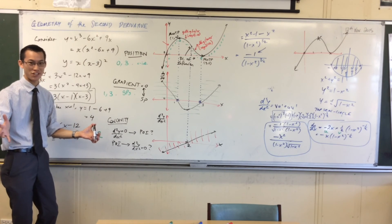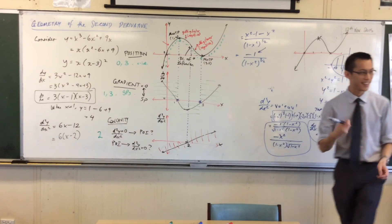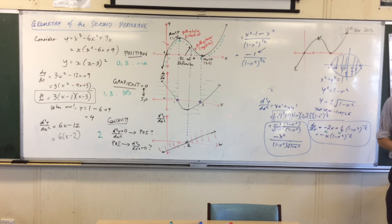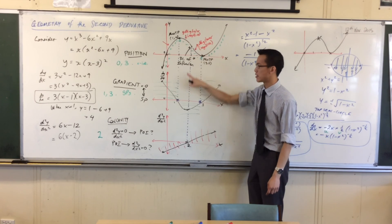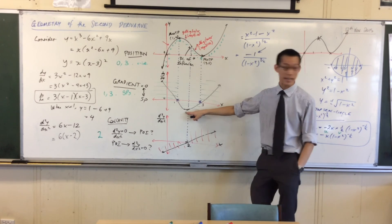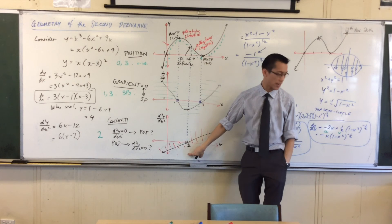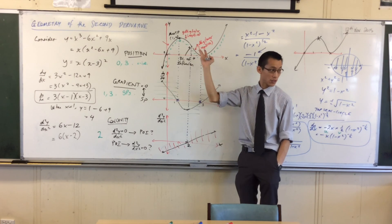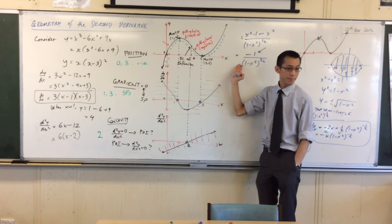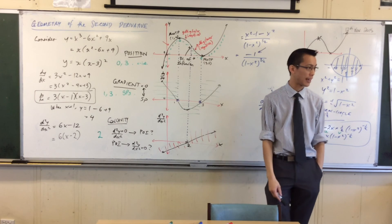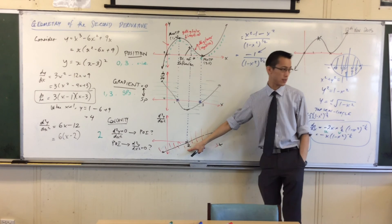Does anyone have any questions before I get you started on the first exercise? A student asks: I thought points of inflection had a gradient of zero? At this point, my first derivative is negative — it's decreasing, that's why it's going down. But that point is where the second derivative is zero, and that's why I have a point of inflection there. The concavity went from concave down to concave up — and so that's what makes it a point of inflection. It doesn't mean the gradient is zero; the second derivative is zero.